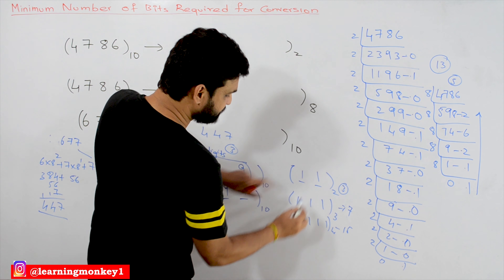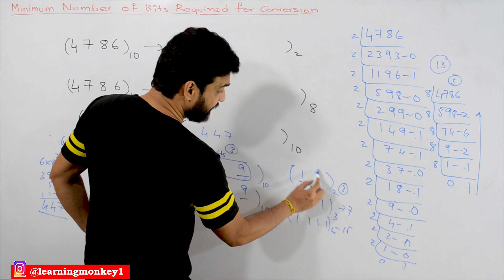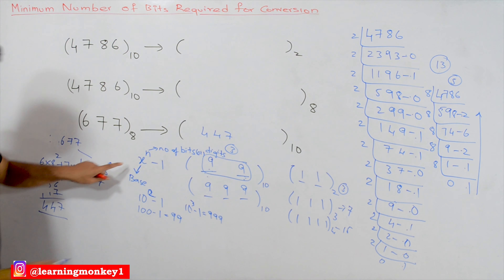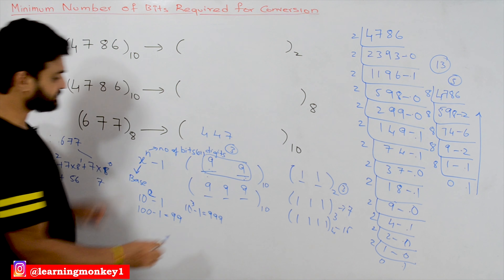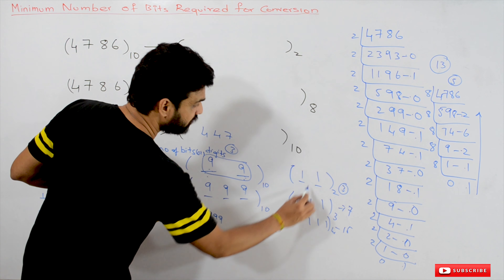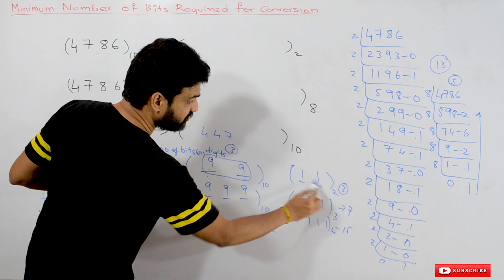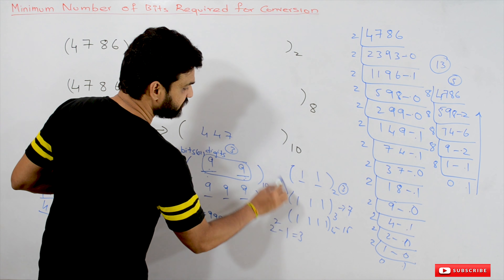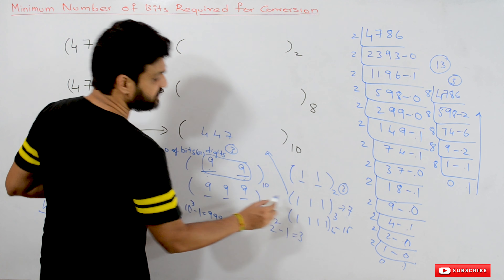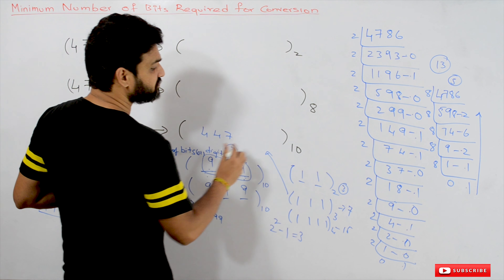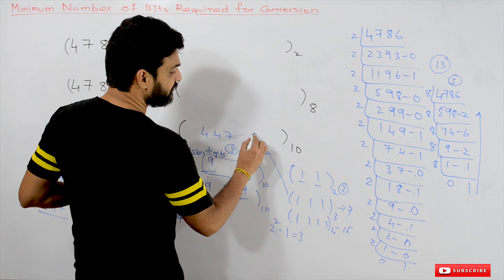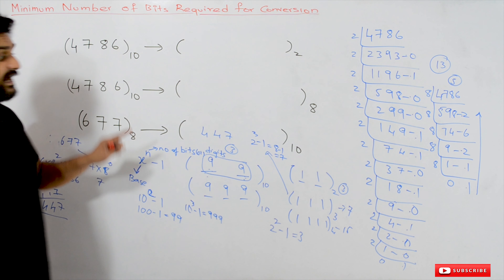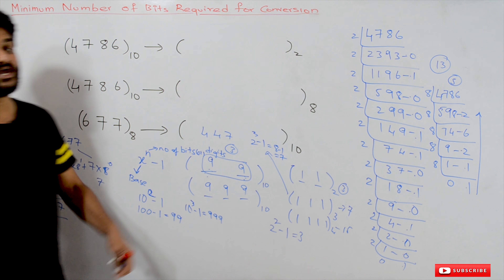This logic is applicable to any number system. Now, how do we find the minimum number of bits for interconversion? With four digits, the maximum decimal number possible is 9999. Any four-digit number lies between 0 and 9999. So we can say: the maximum number possible with a given N bits, which is X^N − 1, is always greater than or equal to the given number.